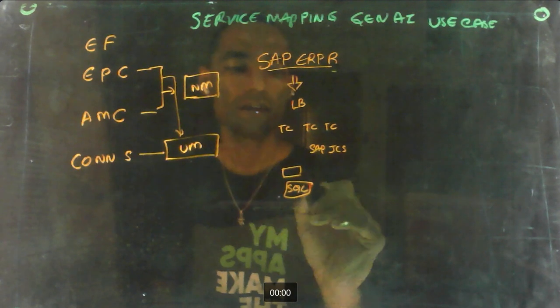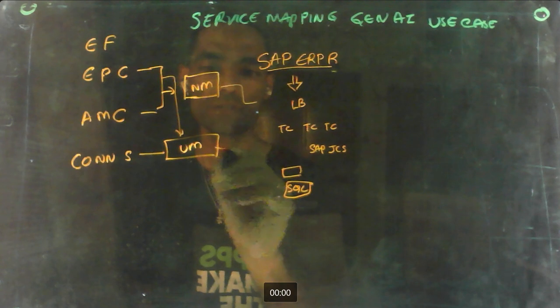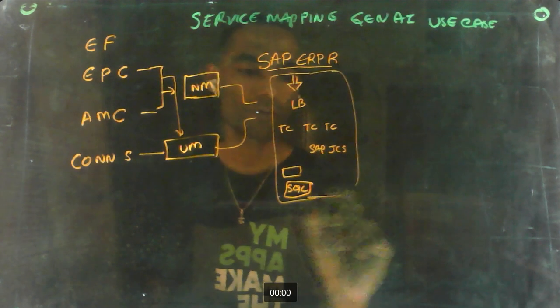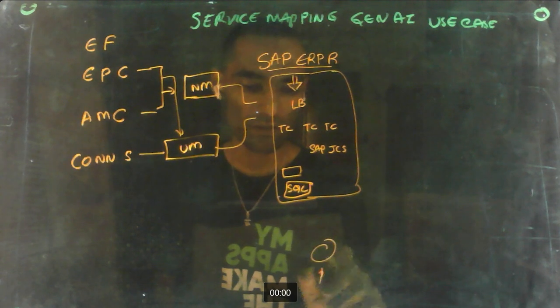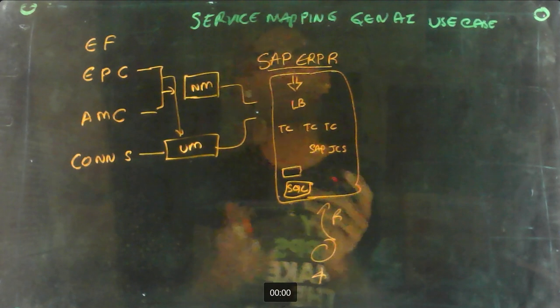Now once you create the map either through this or this, this is your map. You'll have the output reviewed by an SME from SAP and we'll get a sign-off. Now this is a general process.